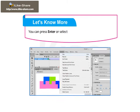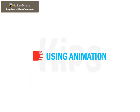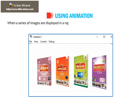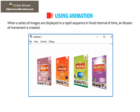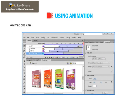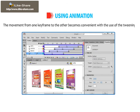You can press Enter or select Ctrl+Play to playback or preview the animation. When a series of images are displayed in rapid sequence at fixed intervals of time, an illusion of movement is created. This illusion of movement created by quick transition of images is termed as animation. Animations can be created in Flash with the help of tweening, which means in-between. The movement from one keyframe to the other becomes convenient with the use of tweening.